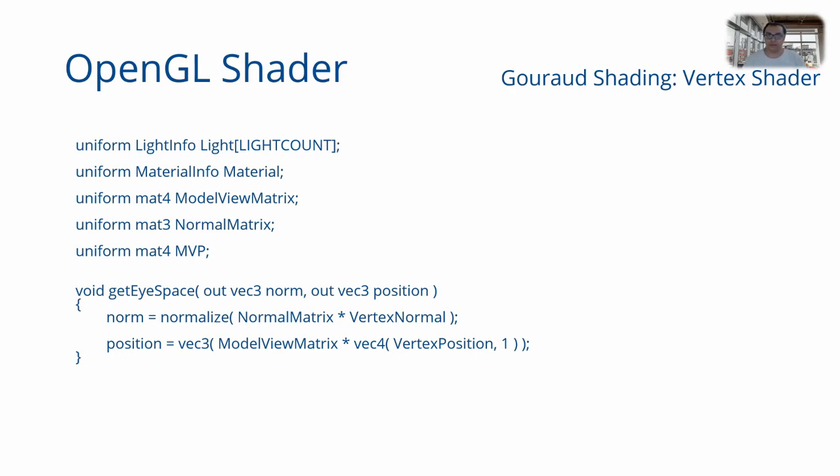We set up some functions. First is this function called getEyeSpace. Given the input normal and position encoded in VertexNormal and VertexPosition, when I multiply it with the model view matrix it gives me the vertex position in VCS. Position represents the vertex position in VCS. Norm represents the normal in VCS.